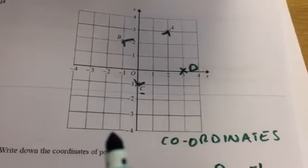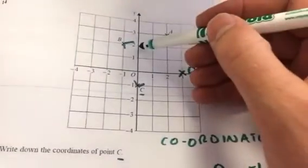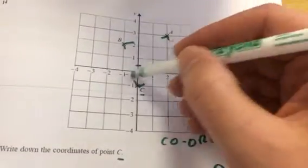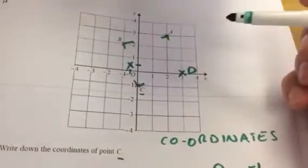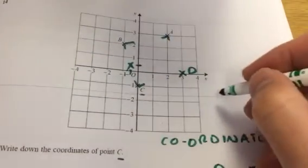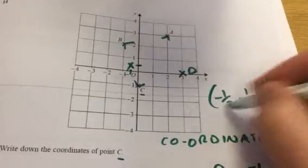So those would be my answers. Let's see, does that make sense for the midpoint? Halfway between there, it'll be there. Halfway along there, that point there. Minus 1 half and 1 half.